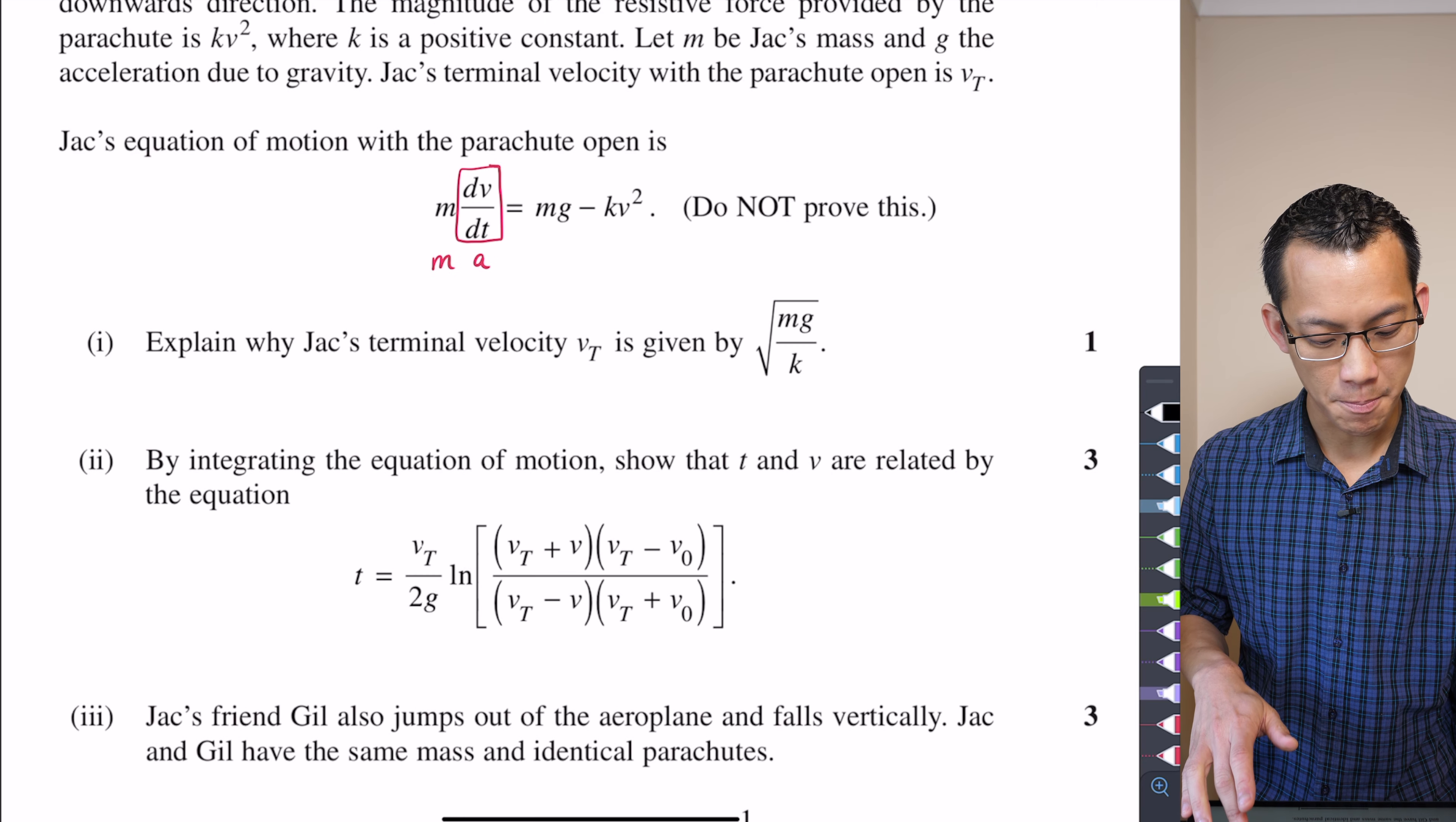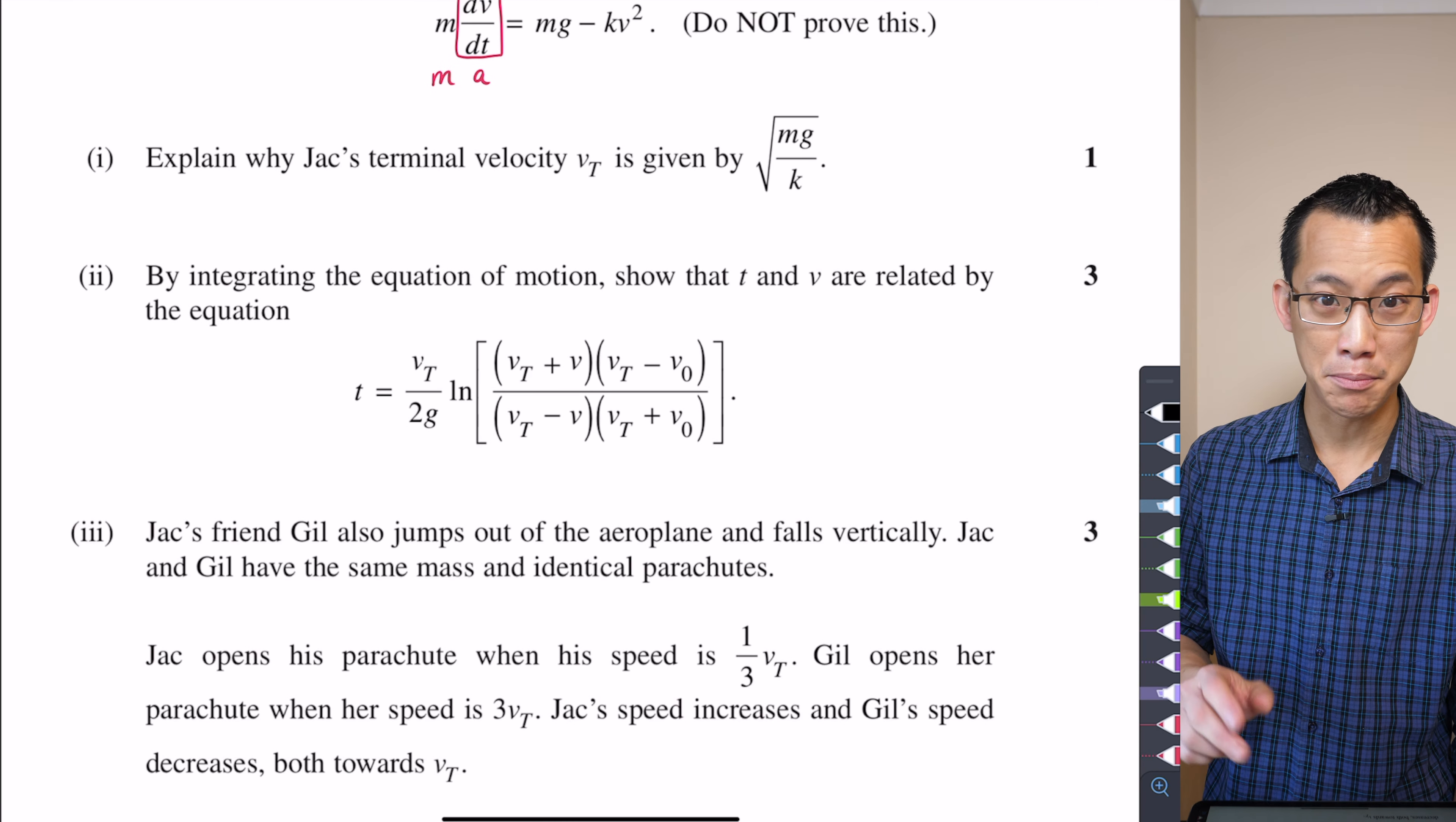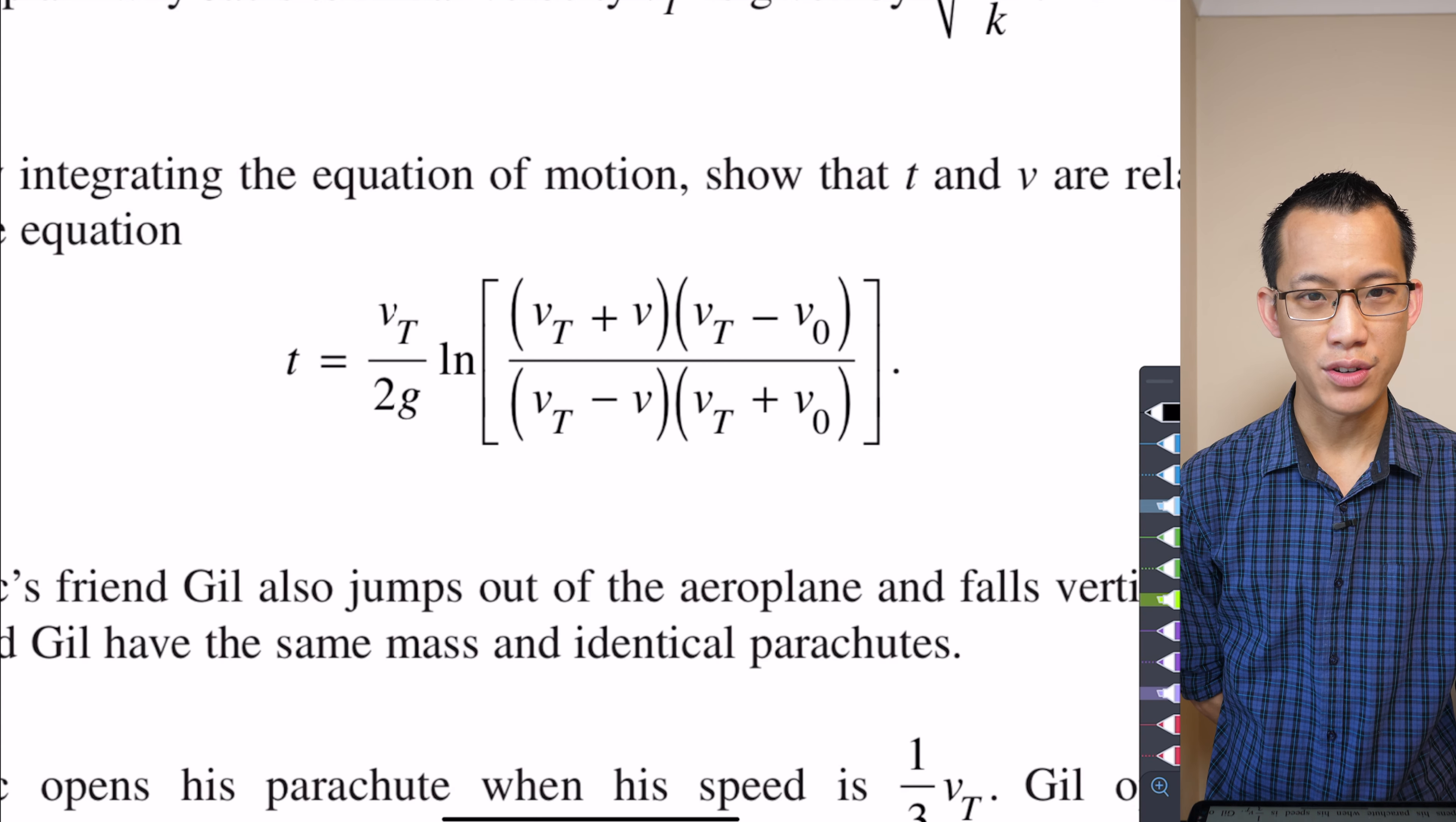They've already done that out of the gate by telling us Jack's equation of motion in this particular format. You don't have to do anything particularly dramatic to it, but this equation here, T equals et cetera, et cetera, et cetera. It just looks weird, right?